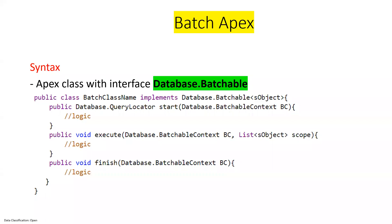In preparation, we have seen how we can write a batch Apex and how we can invoke it. When we started batch Apex, we talked about implementing the database.batchable interface. There are three methods: start, execute, and finish. Start and finish execute once, while the execute method runs depending on the total number of records.